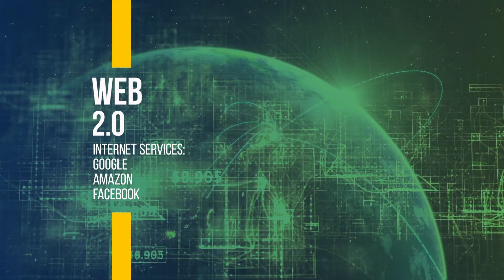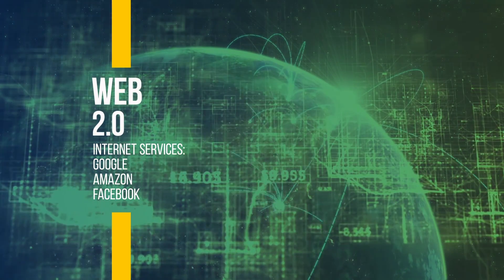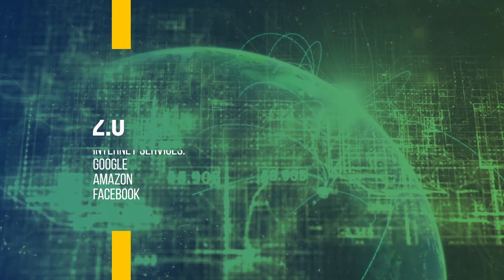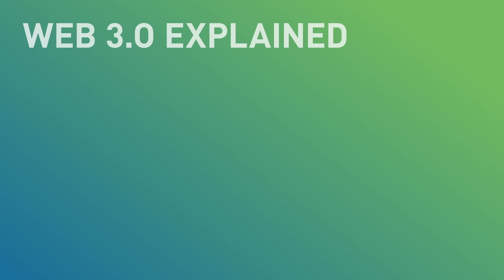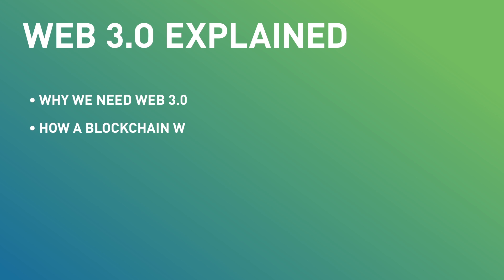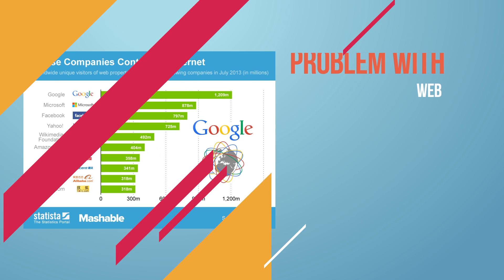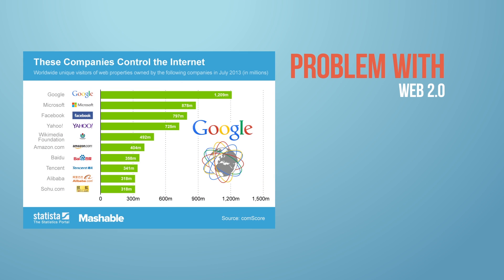For example, Google, Amazon, Facebook, Netflix. Now we need to move to web 3.0, and there are multiple reasons we need to build it. A quick overview of this talk: why we need web 3.0, how a blockchain works, and what the web 3.0 stack looks like today.